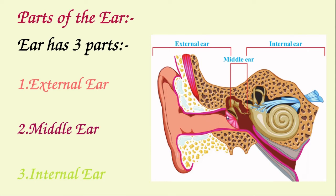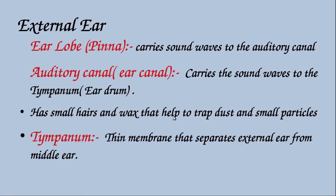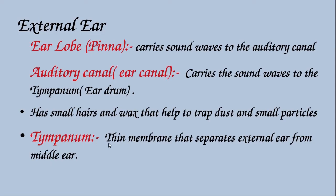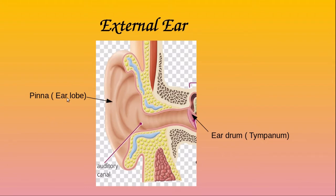The ear canal has small hairs and wax produced by wax glands, which help to trap dust particles, foreign particles, microorganisms, and minute insects that enter the ear. This is a protective function. The tympanum is a very thin membrane that separates the external ear from the middle ear. Sound collected by the pinna passes through the auditory canal and reaches the eardrum or tympanum.